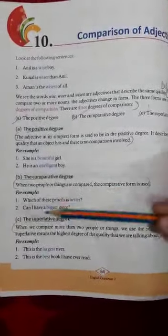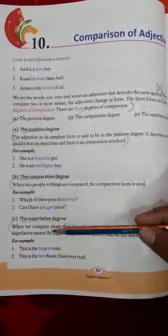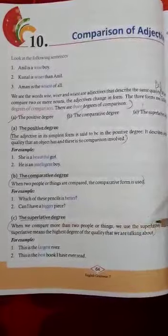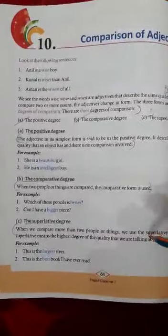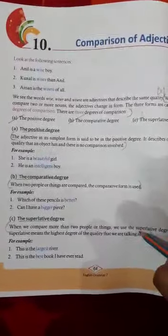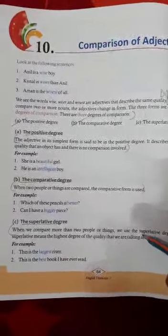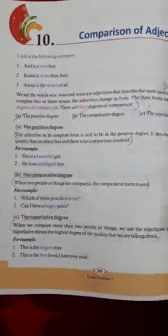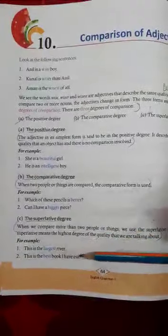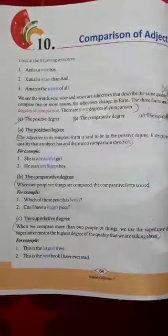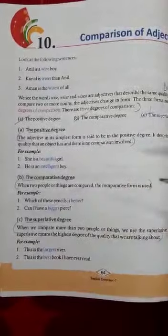Superlative degree: when we compare more than two people or things, we use the superlative degree. Superlative means the highest degree of the quality we are talking about. It uses the EST form, or for words where EST cannot be added, we use 'most'. Use comparative degree when comparing 2 people, and superlative degree when comparing 3 or more.